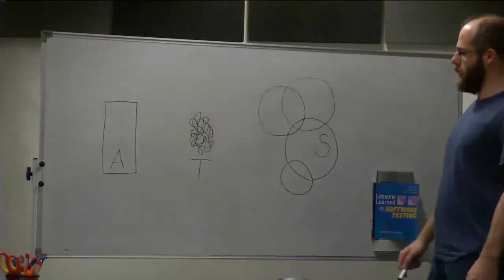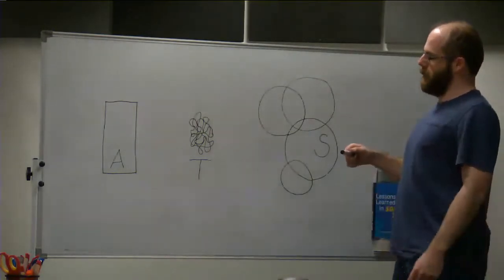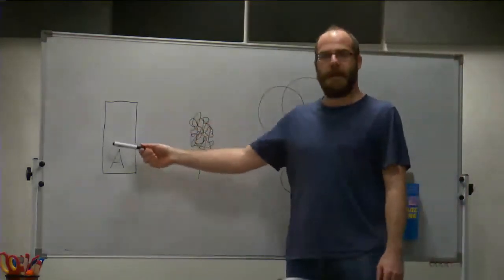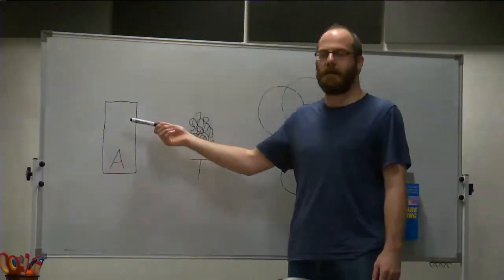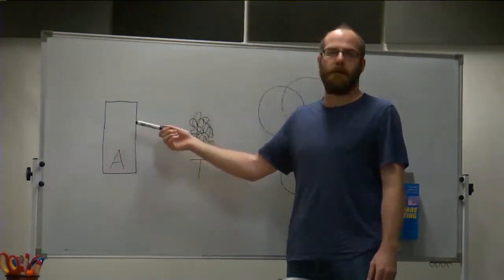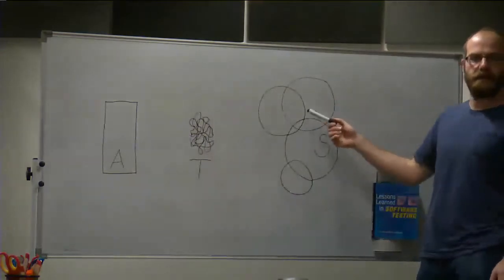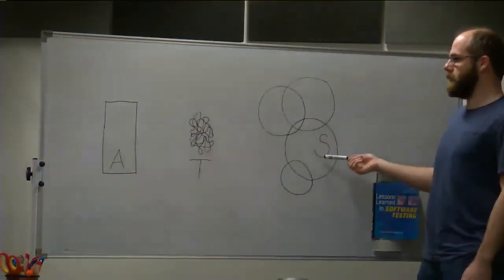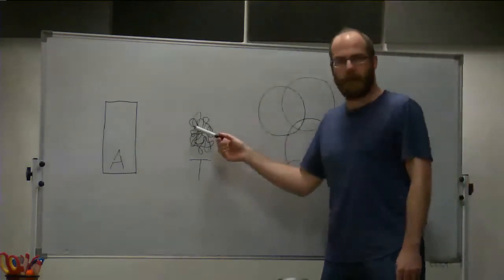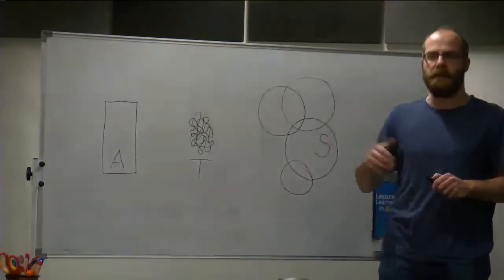You can see three objects here. First of all, with letter A, this is the application, the software that we are testing that we want to know more about. Here, all these different sized circles represent stakeholders with the letter S, and here this wiggly line in the middle with the letter T, that's testing itself.